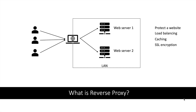SSL encryption is a very compute-intensive task. If a web server has to establish SSL encryption with all the clients, then web servers will end up spending a lot of CPU on this activity. So the better thing is that web servers delegate this work to the reverse proxy. The reverse proxy will take care of establishing SSL encryption with all the clients. Web servers will only establish SSL encryption with the reverse proxy, which will significantly reduce the CPU cycles they spend on SSL encryption. This will help them serve more and more clients. By delegating SSL encryption work to the reverse proxy, web servers can focus on something else.